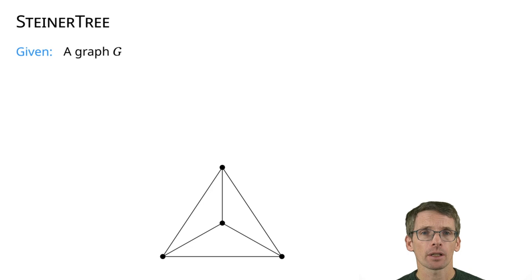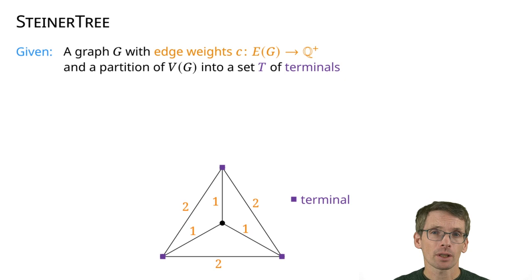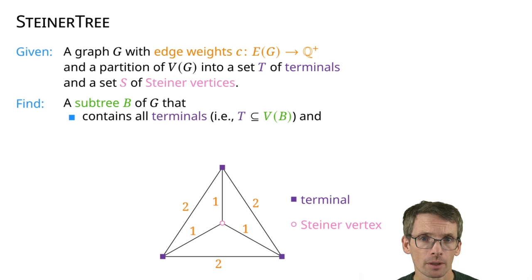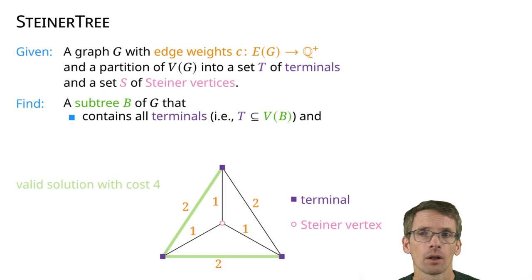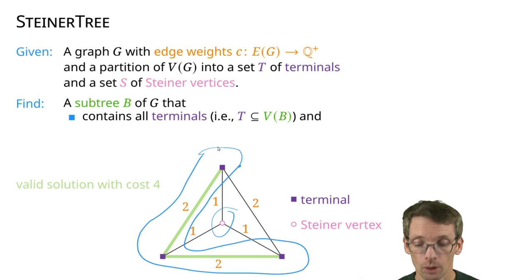Here we are given a graph with positive edge rates and the vertices come in two types. We have the terminals, shown as squares, which are the vertices we care about, and then we have some additional vertices called Steiner vertices, shown in pink. A Steiner Tree is a subtree that contains all of the terminals. It may also include Steiner vertices but does not need to. For instance, this is a Steiner Tree and it has cost 4, because if we add up the edge rates they add up to 4.